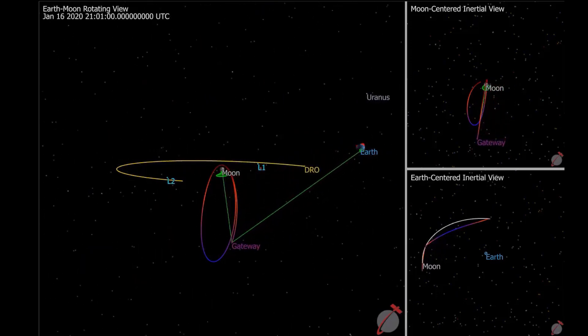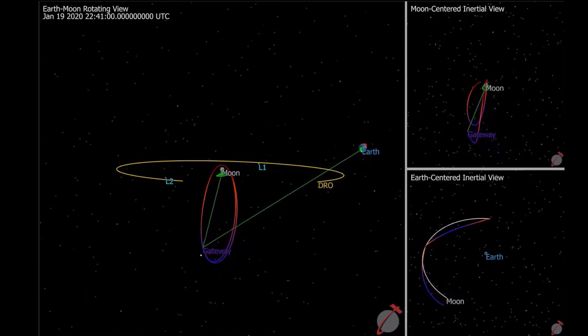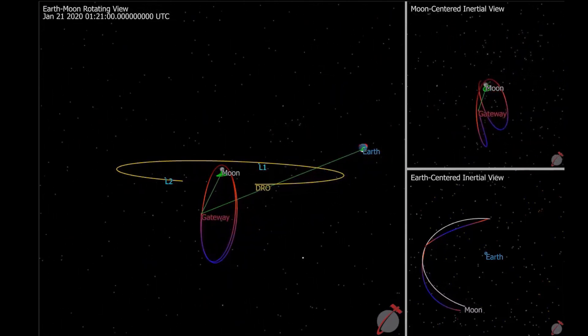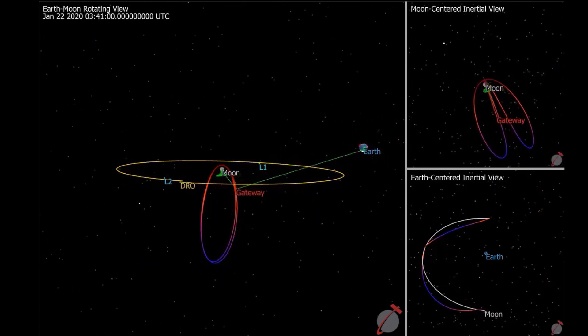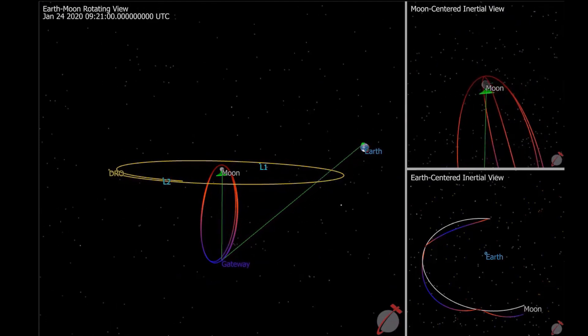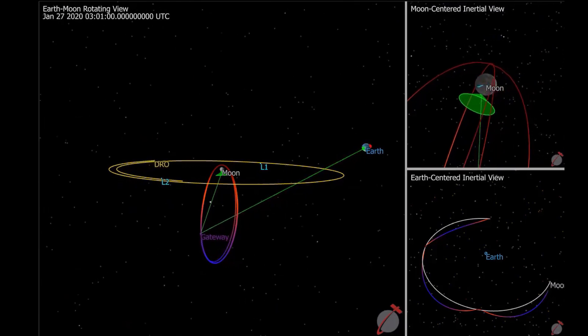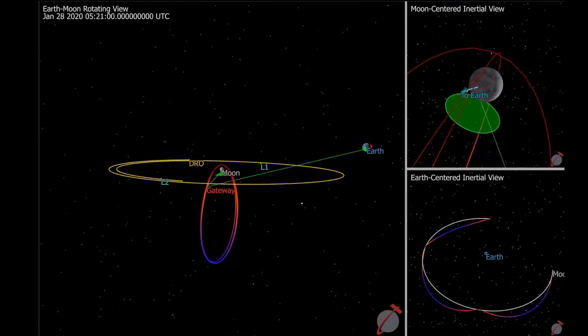So when you've got a highly eccentric orbit, it spends most of its time far away. Therefore, this will spend a lot of time over the South Pole, able to aid with the communications and then whip by very quickly over a few hours over the North Pole before coming back into view. So the Gateway will be able to act as a communication relay for operations on the surface.